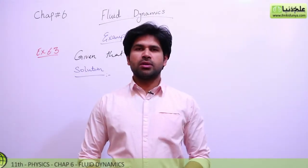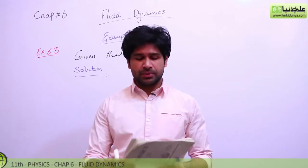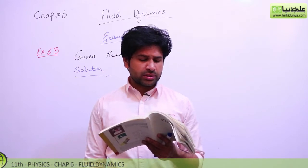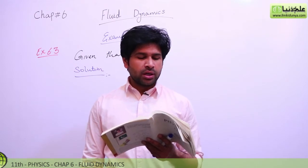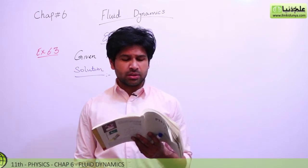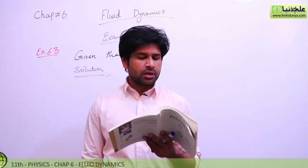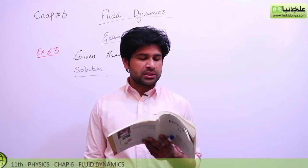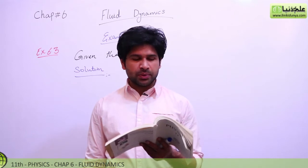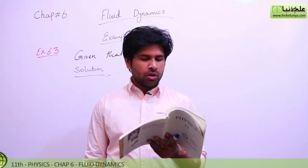Students, we are going to solve our next numerical example of chapter number six, which is 6.3. The numerical statement: water flows downhill through a closed vertical funnel. The flow speed at the top is 12.0 centimeters per second, the flow speed at the bottom is twice the speed at the top, the funnel is 40.0 centimeters long, and the pressure at the top is 1.013 × 10⁵ newton per meter square. What is the pressure at the bottom?